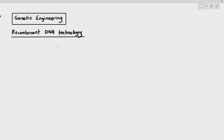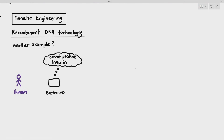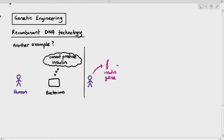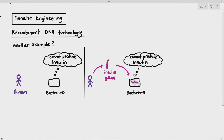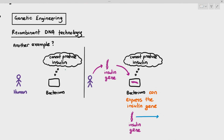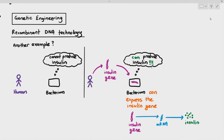Another example of recombinant DNA technology: we have a human and a bacterium. Naturally, bacteria cannot produce insulin — they don't need to control blood sugar concentration, so they have no insulin genes. But we can take the insulin gene out of the human and artificially insert it into the bacteria. Now that the bacteria has the gene, it expresses it, produces mRNA, and mRNA undergoes translation to produce the insulin protein. We can take that insulin out of the bacteria and use it to treat people with diabetes — that is a practical application of recombinant DNA technology.